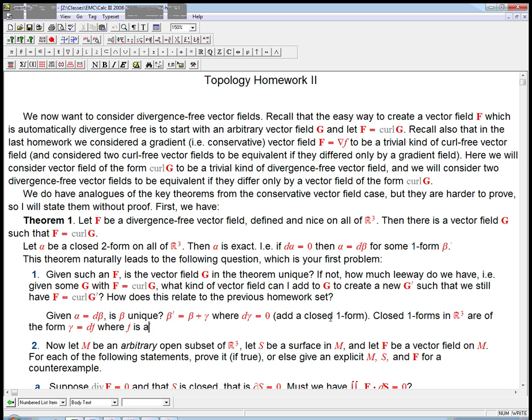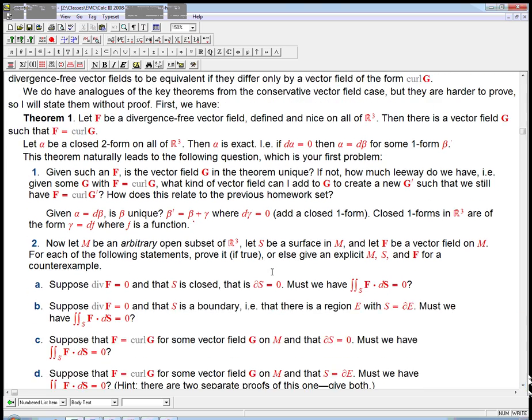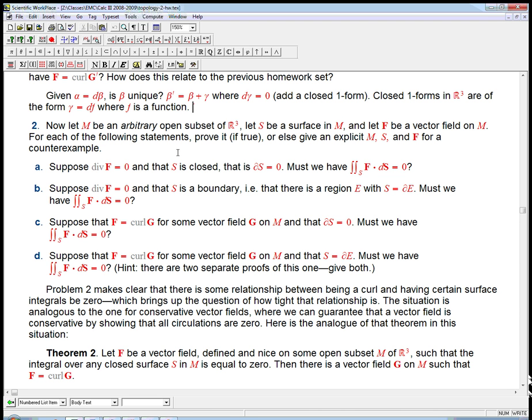Closed one forms in R3 are of the form gamma equals df, where f is a function. So this is what we see again, like in the previous video, the non-uniqueness in the explicit way to describe alpha by as d beta that leads to exactly the same question. It's got to be a closed one form. Is that exact? Is that df? Well, if it's on all of R3, it is. But if we weren't one connected, if we had taken like a circle out or a line out or something, then this wouldn't be true. So even though we started out being interested in sort of the two-form analysis of the topology of R space, we can actually be led back to the one-form analysis as well.